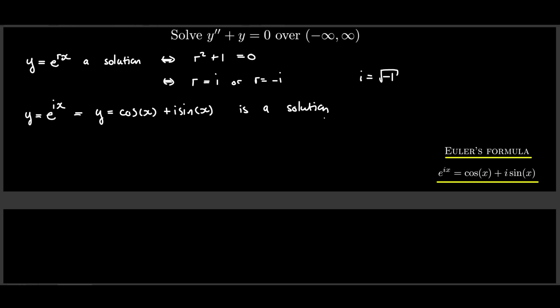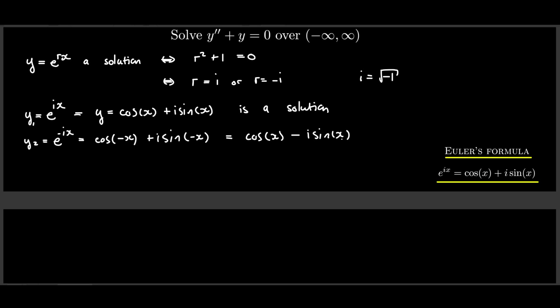So e^(ix) is a solution, meaning y = cos(x) + i·sin(x) is a solution. We also have a second root giving e^(−ix) = cos(x) − i·sin(x) as another solution. However, there's still a problem: these solutions are not real-valued — plugging in a real x value gives a complex number, but we want real solutions.